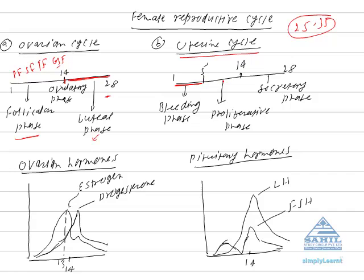During proliferative phase, the broken down endometrium is reformed. Because reformation of endometrium occurs during this phase, the phase is called proliferative phase.